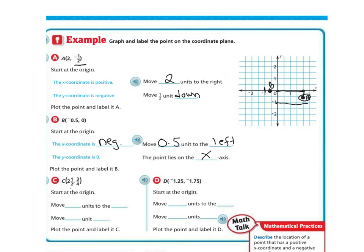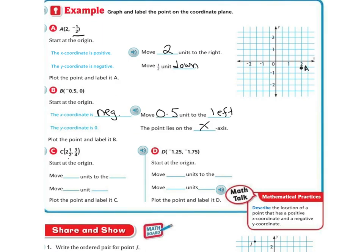Next we have point C at (2½, ¾). I'm going to move 2½ units to the right because it's positive, and then move ¾ of a unit up because it's positive. Going over 2 — and it looks like every 2 small divisions equals 1, so one division equals one half — that's my x position. Then moving up ¾: if that's a whole and that's a half, halfway in between those two is ¾. So I put my dot right there and label it point C.